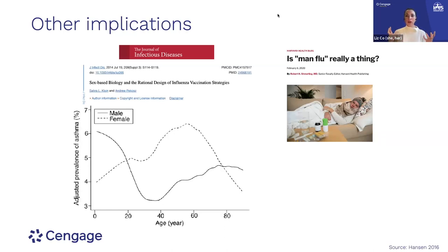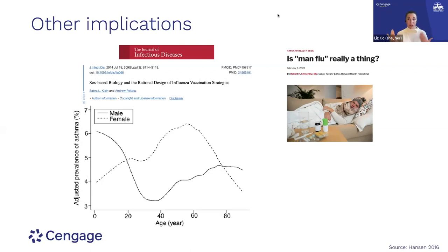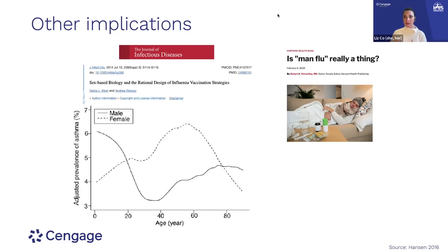Currently, every adult gets the same dose of all vaccines, and every child gets the same dose of whatever vaccine. It appears that we are really under-considering these factors, and I think it could be a tremendous benefit to do more consideration of menstrual cycle within clinical trials.